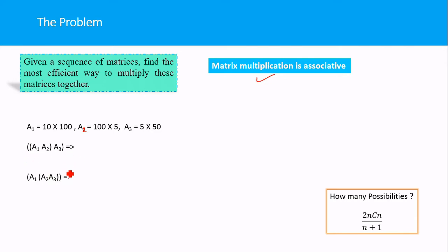Which order will you choose? You have to find the optimal or most efficient possibility. Efficiency is measured in terms of the number of scalar multiplications needed for the computation.